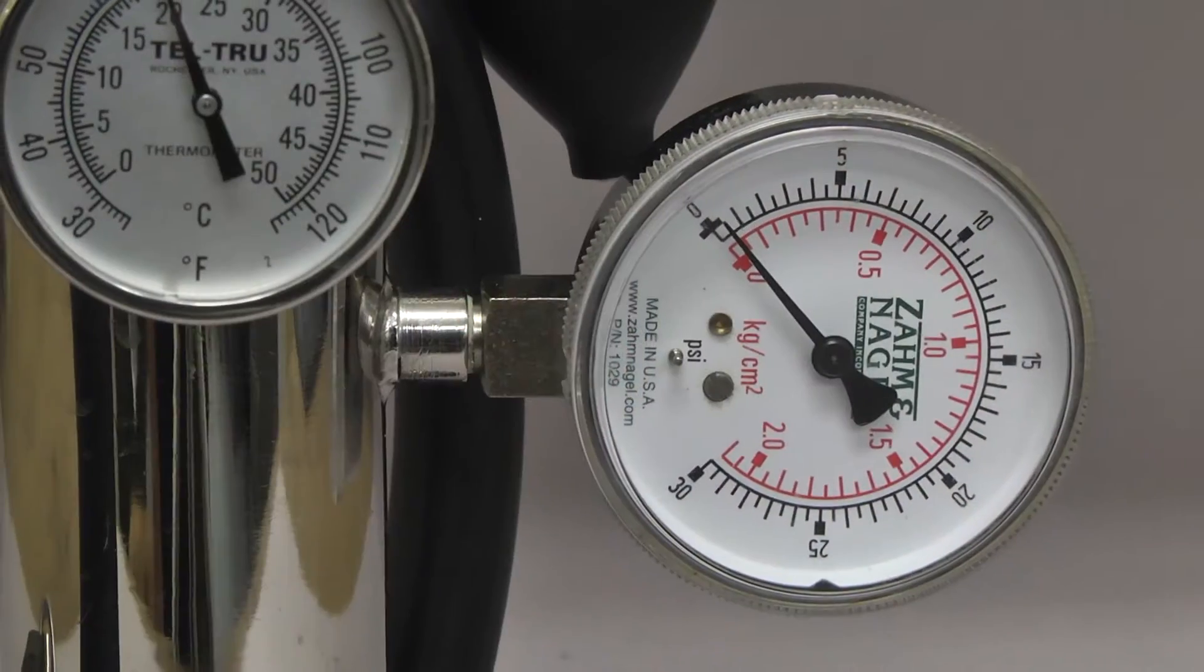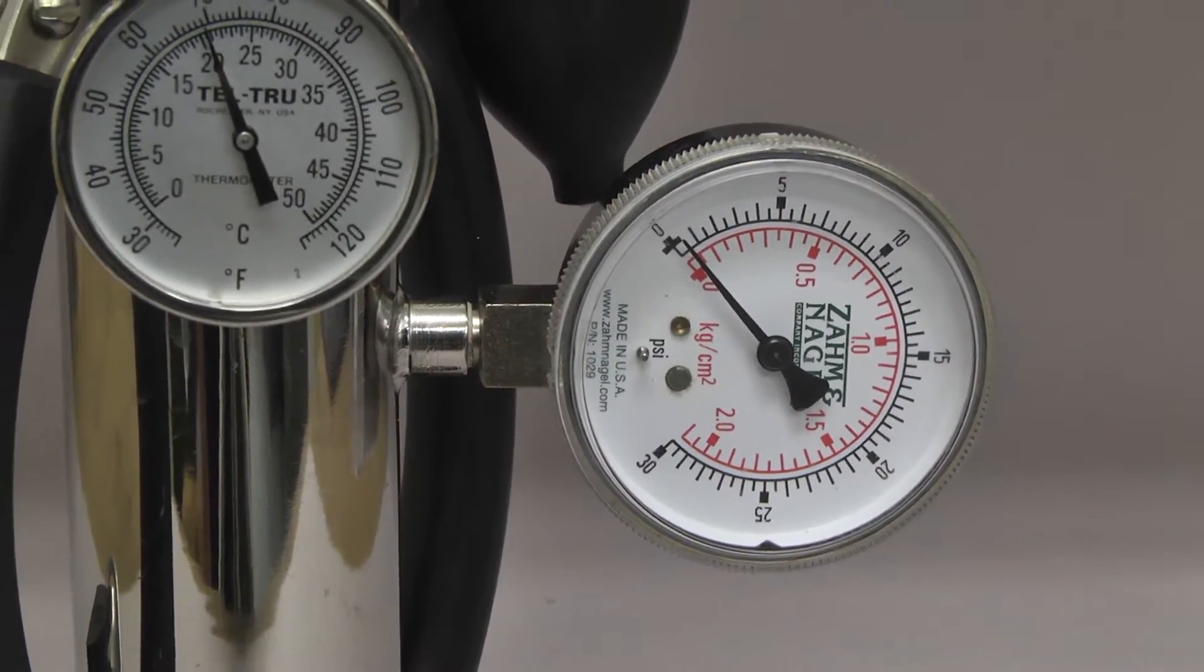To test and calibrate, remove the gauge from the instrument by unscrewing counterclockwise.